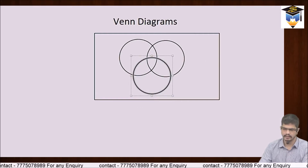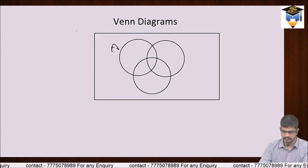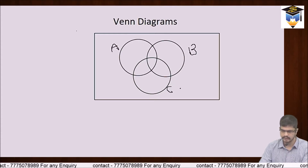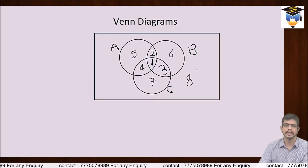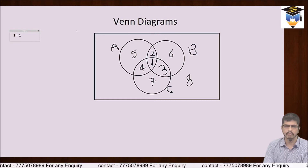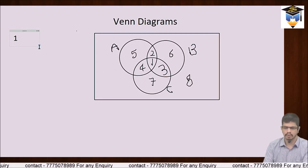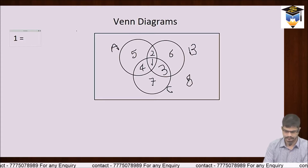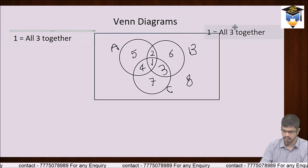Ab teen sets ke example mein aate hain. Maan lo yahan A set hai, yeh B set hai, aur yeh C set hai. Toh in teen sets ke saath 8 types ke areas hote hain. Area 1 ka matlab hai all three together — A ∩ B ∩ C.